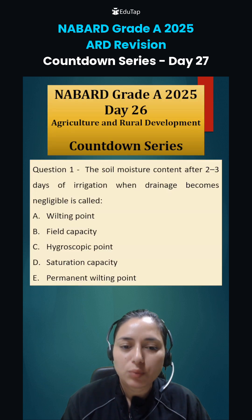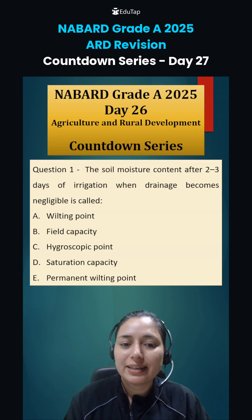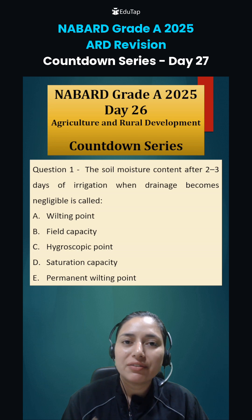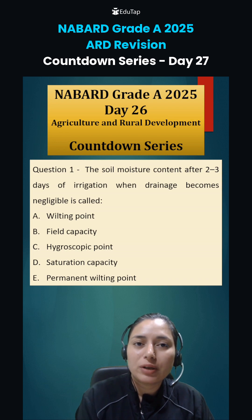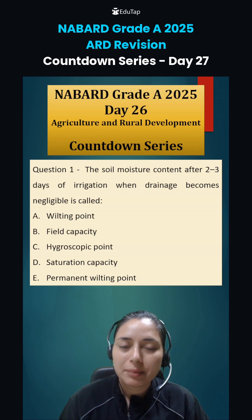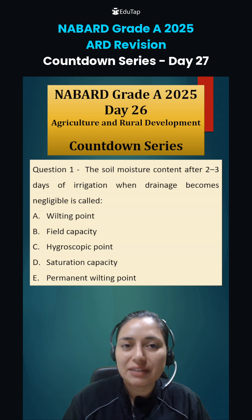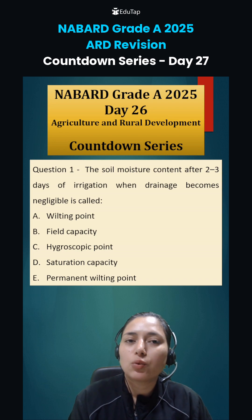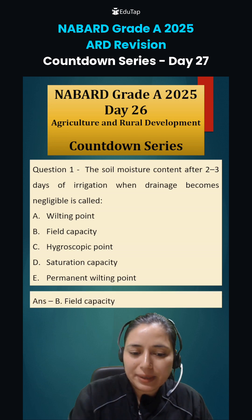The first question of Day 26 was: the soil moisture content after 2-3 days of irrigation, when drainage becomes negligible, is called what? Whenever we give irrigation, the first condition is called saturation value — all micro and macro pores get filled with water. But after 2-3 days, macro pores, as they are bigger in size, drain out, and water is left only in micro pores. That condition is known as field capacity.